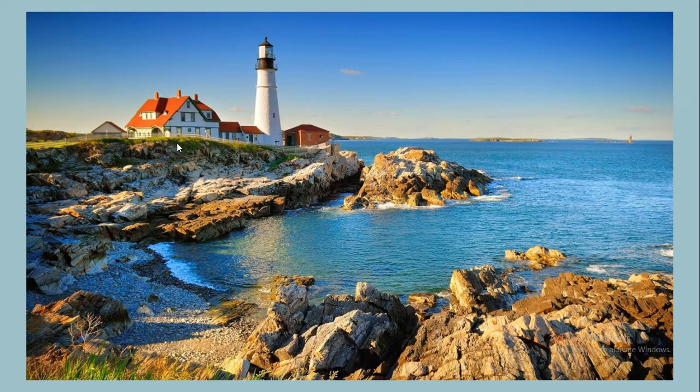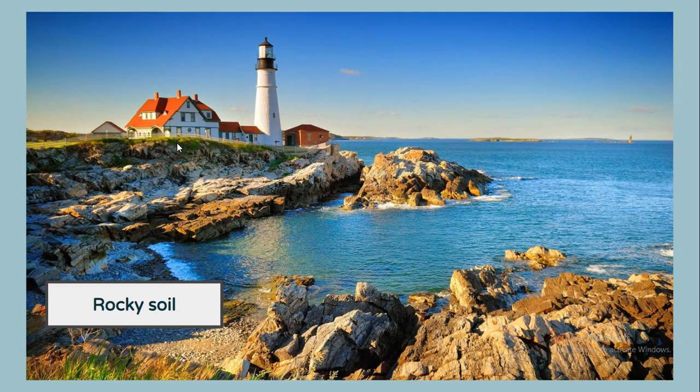The next thing we need to discuss are some of the elements of the geography of Boston, Massachusetts, and New England overall. The first thing I want to point out is how rocky their soil is. Notice that all along these harbors and along the water, it's not sandy beaches or soil — it's rocks. This made farming very difficult for people in New England.